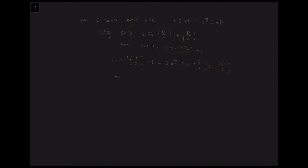Simplifying, we get 2 cos(theta/2) times cos(theta/2) equals 2 root 3 sin(theta/2) cos(theta/2), which reduces to tan(theta/2) equals 1 over root 3. Taking the inverse tangent gives theta over 2 equals pi over 6, so theta equals pi over 3.